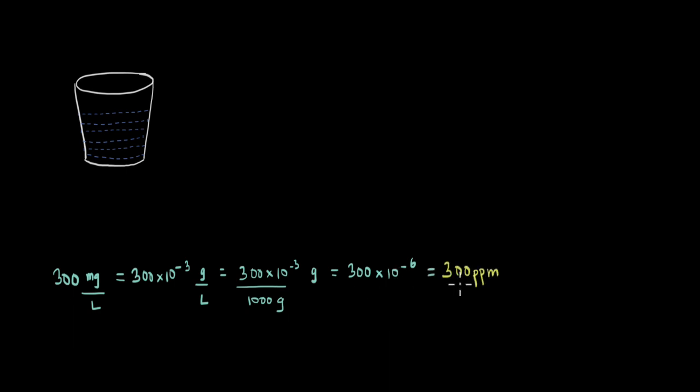We can write this as 300 ppm or parts per million. If we rearrange milligrams per liter for water, we get ppm. You can realize how small this quantity is.